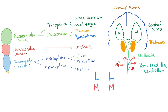The CSF goes all around the brain and spinal cord — in the subarachnoid space. Inside the brain it's in the ventricles; inside the spinal cord it's in the spinal canal.